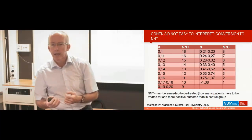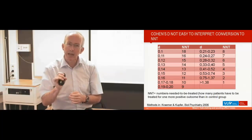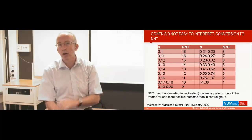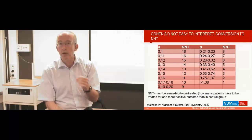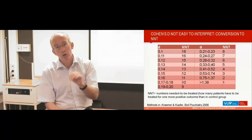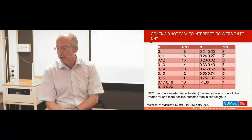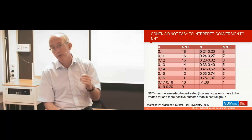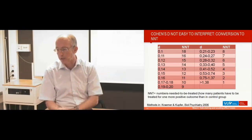The most straightforward method was developed by Kramer and Kupfer. It's not the best method, but it's the most straightforward, and it has the advantage that each effect size directly corresponds with one value for numbers needed to be treated. Numbers needed to be treated indicate the number of patients you have to treat with one treatment in order to have one more positive outcome than in the alternative condition. For example, an effect size of 0.1 indicates a numbers needed to be treated of 18, meaning you have to treat 18 patients to have one more positive outcome than no treatment.